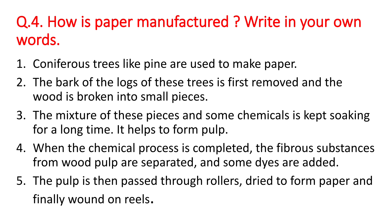Then the mixture of these pieces and some chemicals is kept soaking for a long time, which helps to form the pulp of the wood. When the chemical process is completed, the fibrous substance from the wood pulp is separated and some dyes are added to give it color. The pulp is then passed through the rollers, dried to form paper and finally wound on the reels. In this way, papers are produced in factories.